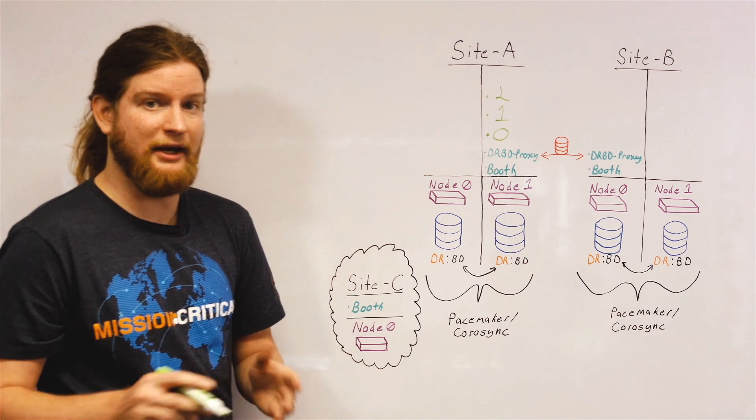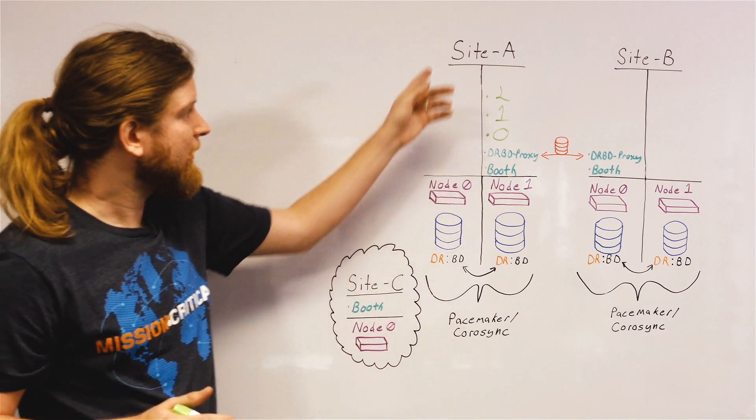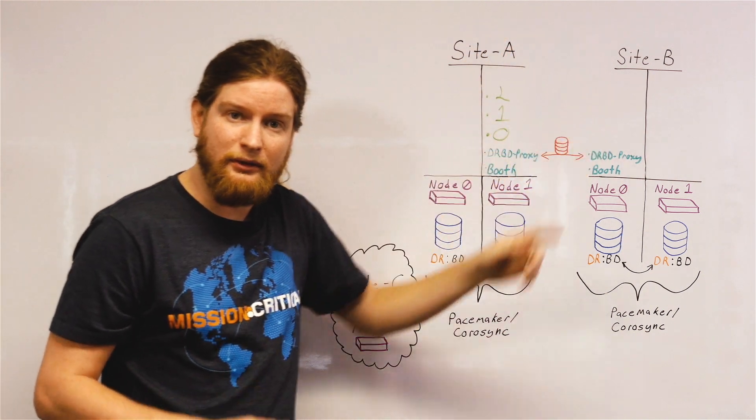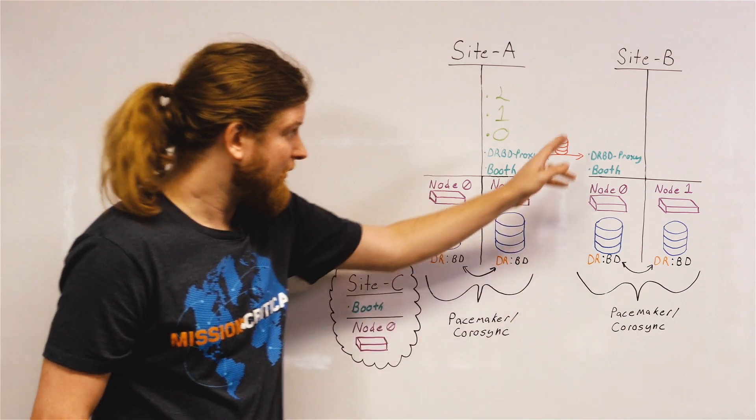So if the entire site were to fail, you would need some way to run services over, in this case, on site B, which has an identical Pacemaker and Corosync cluster on that site.